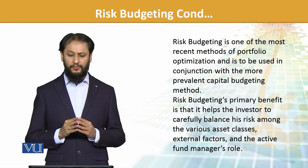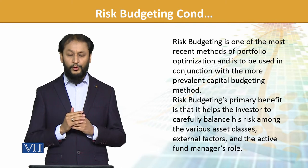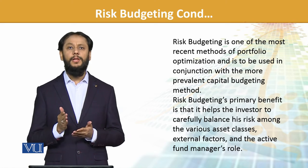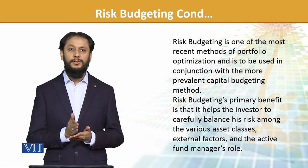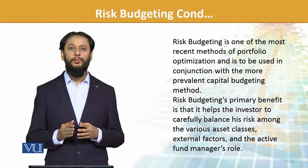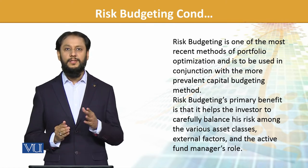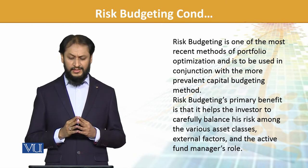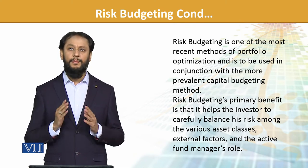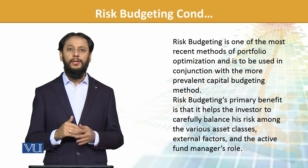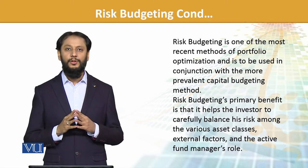Risk budgeting is one of the most important methods of portfolio optimization and it is used in conjunction with the more prevalent capital budgeting. Capital budgeting was about assigning how much money to allocate; risk management budgeting is incorporated and combined with it. Don't just see the values — see what the risk association is, and allocate based on that. Risk budgeting's primary benefit helps investors to carefully balance risk among various asset classes and spread that risk.